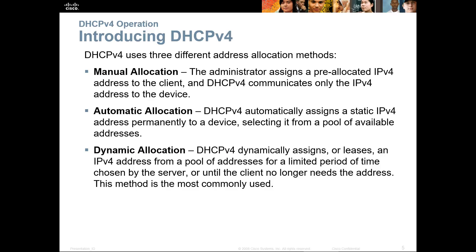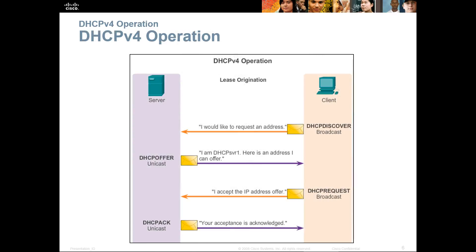For basic DHCP operations: when a client comes up, it sends a DHCP Discover broadcast — essentially requesting an address. The server sends a unicast DHCP Offer back: 'I am a DHCP server; here is an address I can offer.' The DHCP Request is sent as a broadcast: 'I will accept this IP address.' The DHCP server then responds with a unicast acknowledgment — the DHCP ACK, short for Acknowledgment — confirming the address assignment.